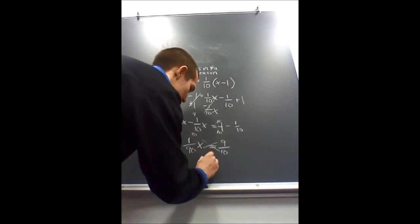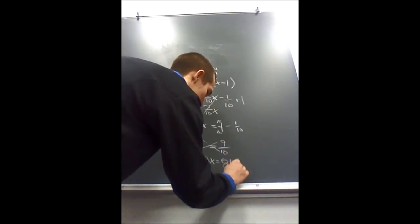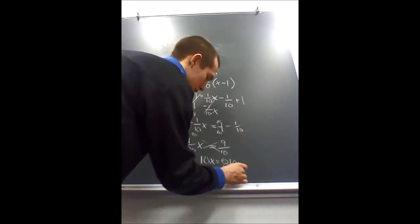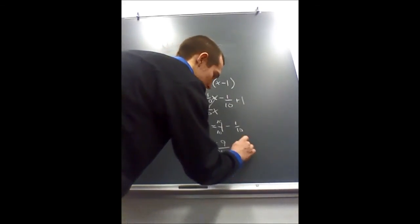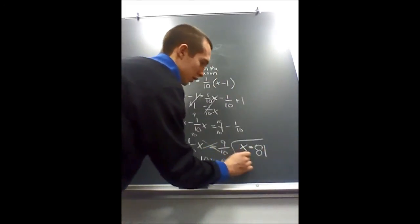And if you cross-multiply, you get 10X is equal to 810, which means if you divide by 10, X is equal to 81 games.